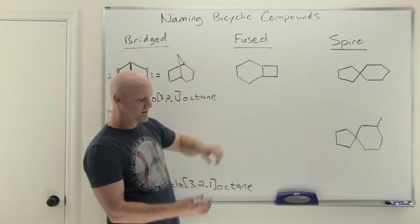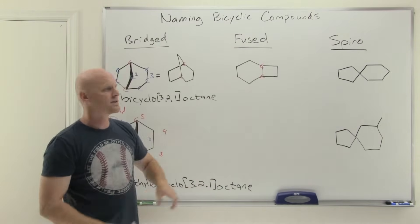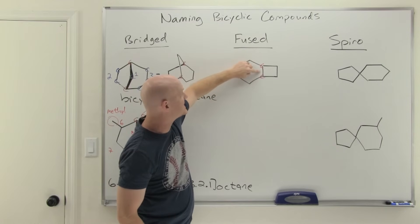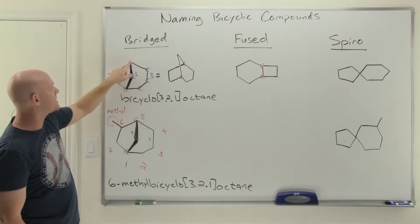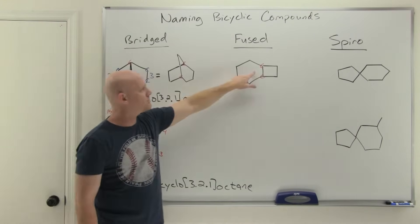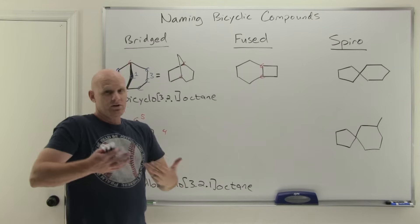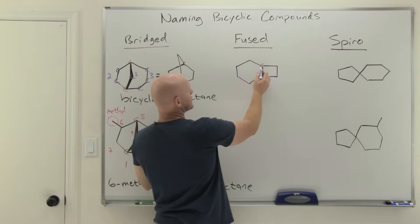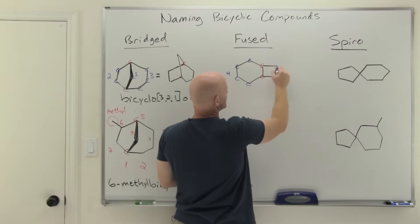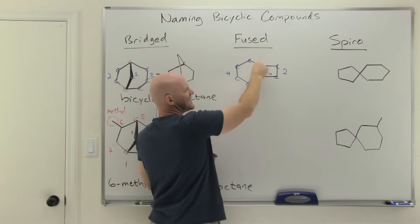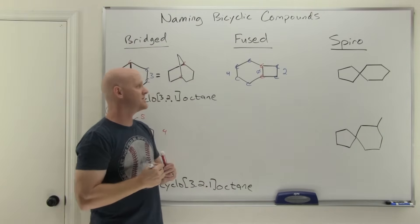Moving on to fused bicyclics: you can find your bridgehead carbons again. What makes it a fused bicyclic is that the two bridgehead carbons are actually bonded directly together. In the bridged bicyclic, they're always separated by at least one carbon no matter which path you take. But in the fused bicyclic, in one of the pathways they're directly bonded to each other. If I take the left pathway there are four carbons in between; the right pathway has two; and the direct pathway has zero.